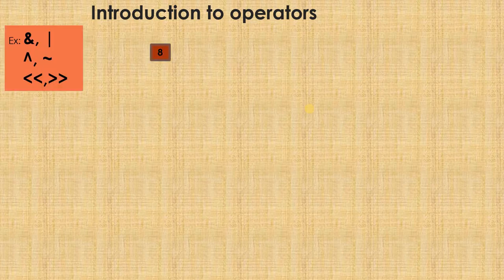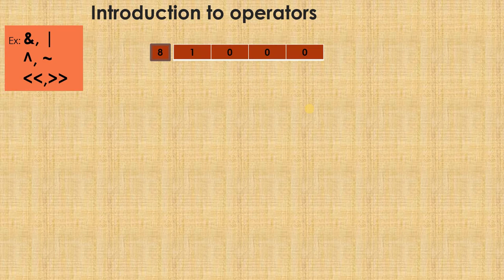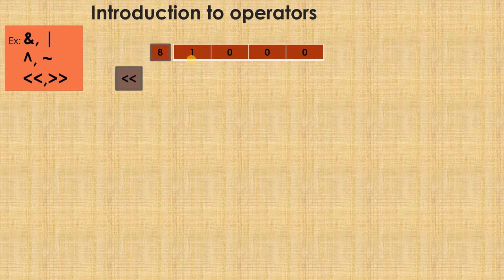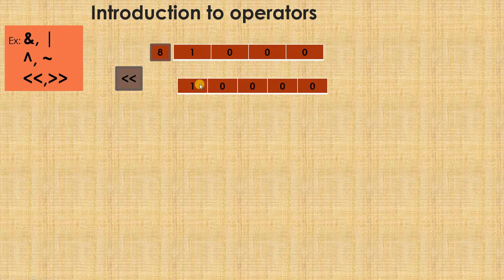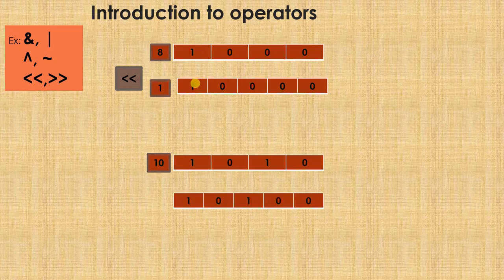On the other hand, the left shift operation — I will take the same number 8. This is the MSB and this is the LSB, the least significant bit. When I do the left shift operation, all these bits shift towards the left: this 1 gets shifted here, this 0 gets shifted here, this 0 gets shifted here, and this 0 gets shifted here. A new 0 is added at the LSB and the 1 has shifted left. If you compute the decimal value of this, it will be equal to 16.